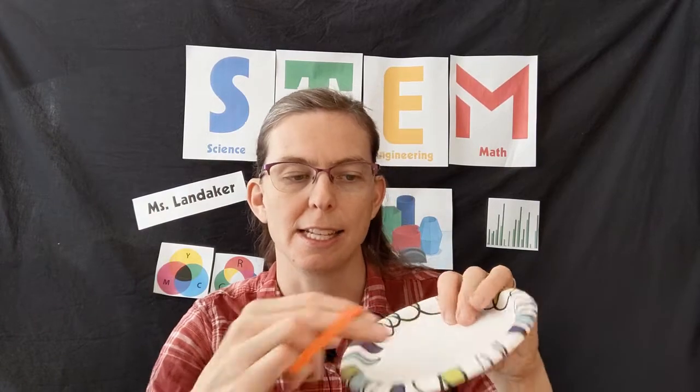Today you are going to do some experiments with sound by making a musical instrument. In your STEM packet there should be a paper plate and two rubber bands. If you don't have a STEM packet, you can find some rubber bands and anything that has an empty space where you can stretch the rubber bands over and they'll have room to vibrate.